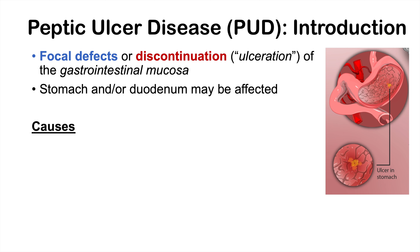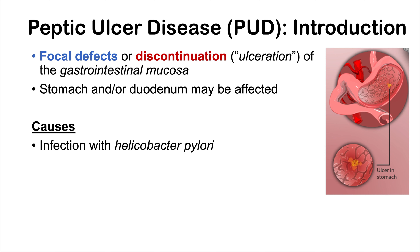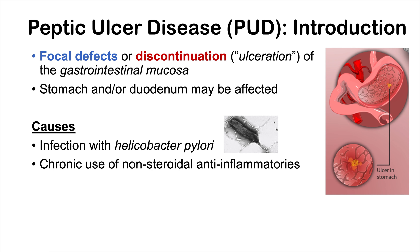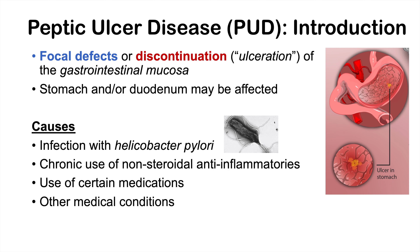Some of the main causes of peptic ulcer disease include infection with Helicobacter pylori, which is a bacteria — this is by far the most common cause of peptic ulcer disease. We can also see that chronic use of non-steroidal anti-inflammatory drugs can lead to peptic ulcer disease, so drugs like ibuprofen or Advil. Use of certain other medications, including some chemotherapies, can also lead to peptic ulcer disease, as can some other medical conditions like Crohn's disease.